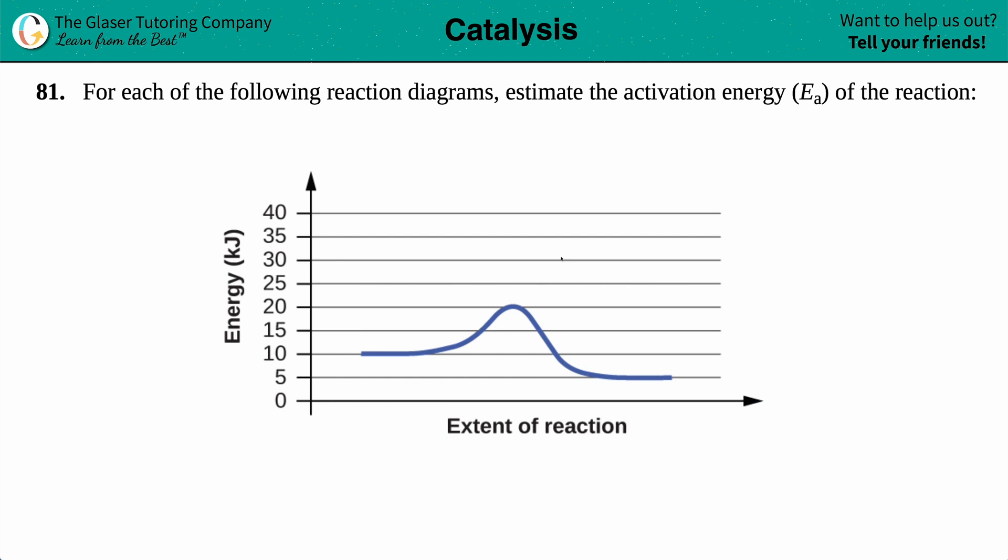Number 81, for each of the following reaction diagrams estimate the activation energy which is Ea of the reaction. So we have our diagram right here for this one, we just have to find out what the activation energy is.